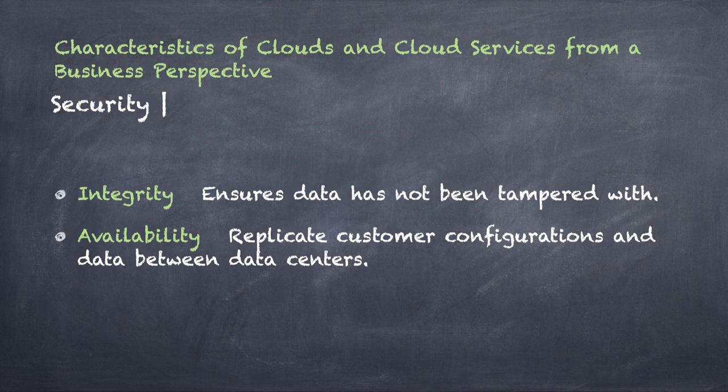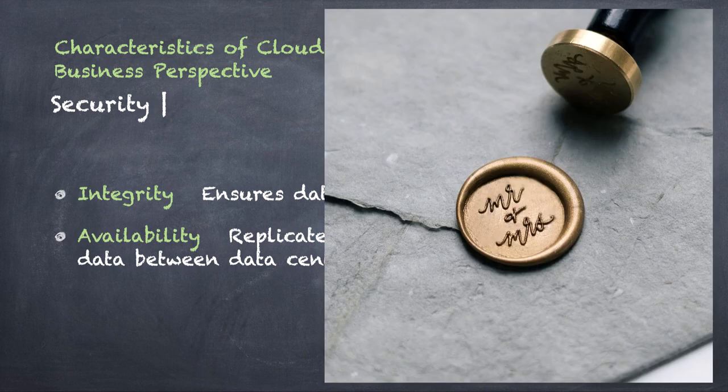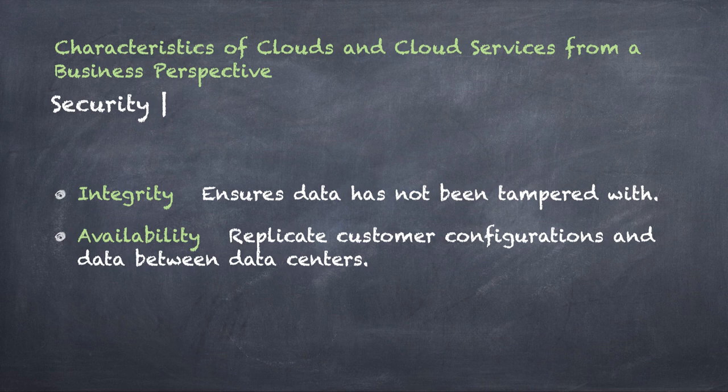Another type of security is integrity. Integrity means the data you're looking at was unaltered — no one tampered with it. A good analogy: in old movies, a king would put his ring in hot wax and seal an envelope. If you received the letter, you looked for the seal — if the seal was broken, the integrity had been broken, meaning someone had at least looked at that data and it may have been altered. The wax seal on the envelope was the integrity.